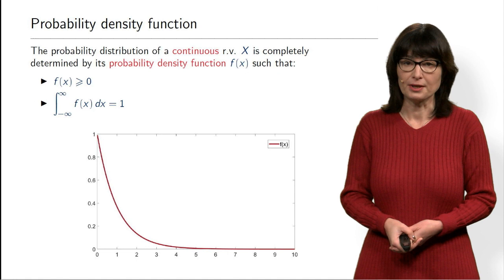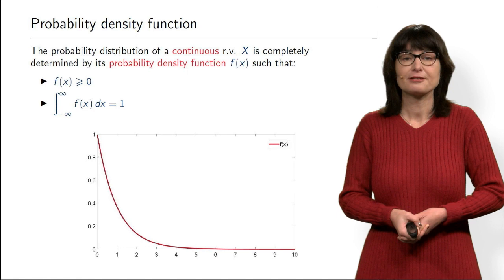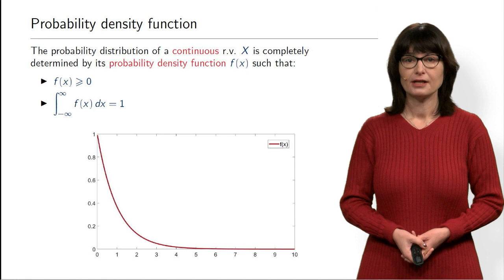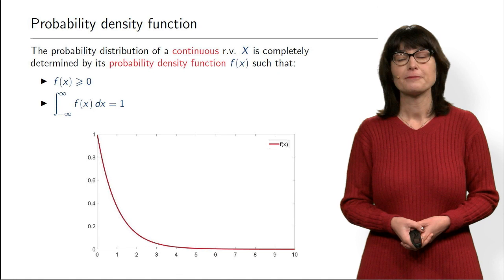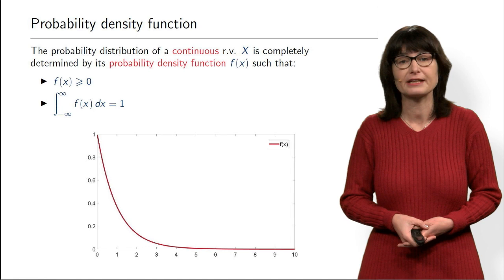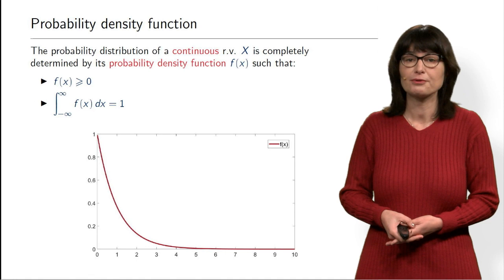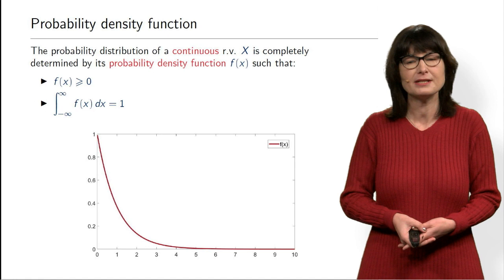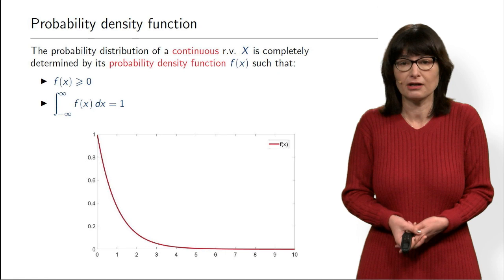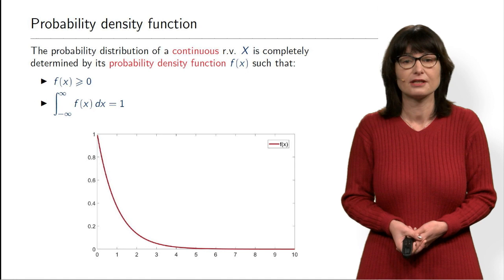You can view it the following way: you have a probability mass of 1. Distribution is how we distribute that probability mass of 1 on the real axis. In the continuous case, we continuously spread this probability mass over a part of the real line — here over positive values — so that values closer to zero get a little more mass, and then it becomes less and less. The higher the density, the more probability mass that area receives.